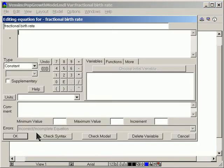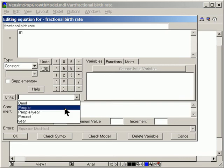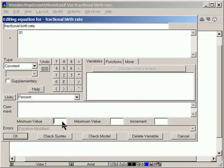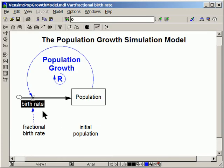Now, a fractional birth rate is the percentage of the population that bears children each year. We're going to use 1%, 0.01. This is percent and a minimum value of zero and a maximum value of 10%, and an increment of 1%. We're done with that.